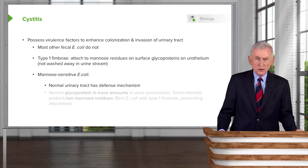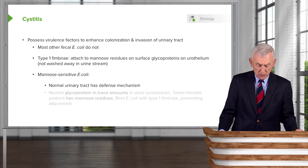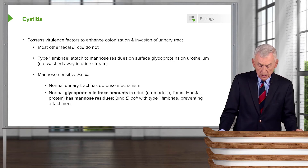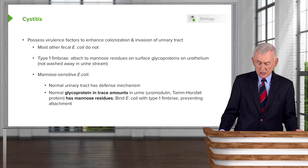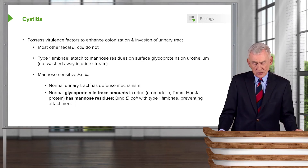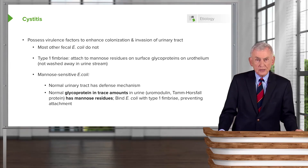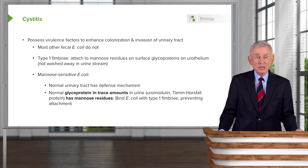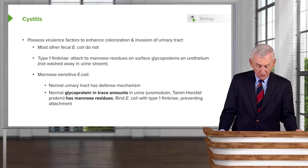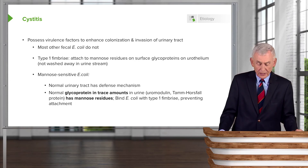The normal urinary tract has a defense mechanism. There is a glycoprotein present in trace amounts in urine called uromodulin — the old name is Tamm-Horsfall protein. This uromodulin has mannose residues on it, so mannose-sensitive E. coli will bind to the uromodulin and then be washed away in the urine stream, never getting a chance to attach because of the uromodulin normally present in urine.